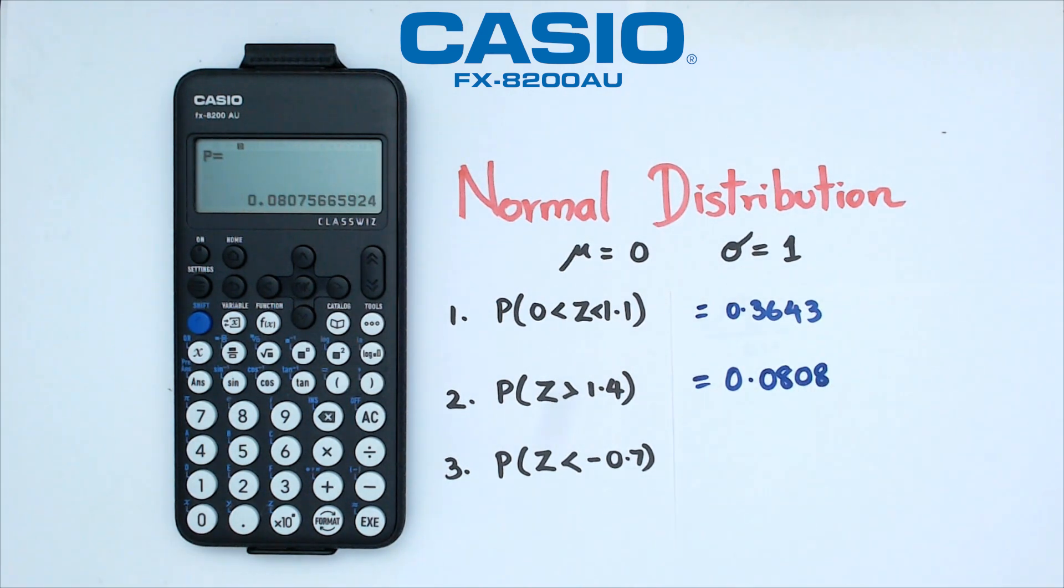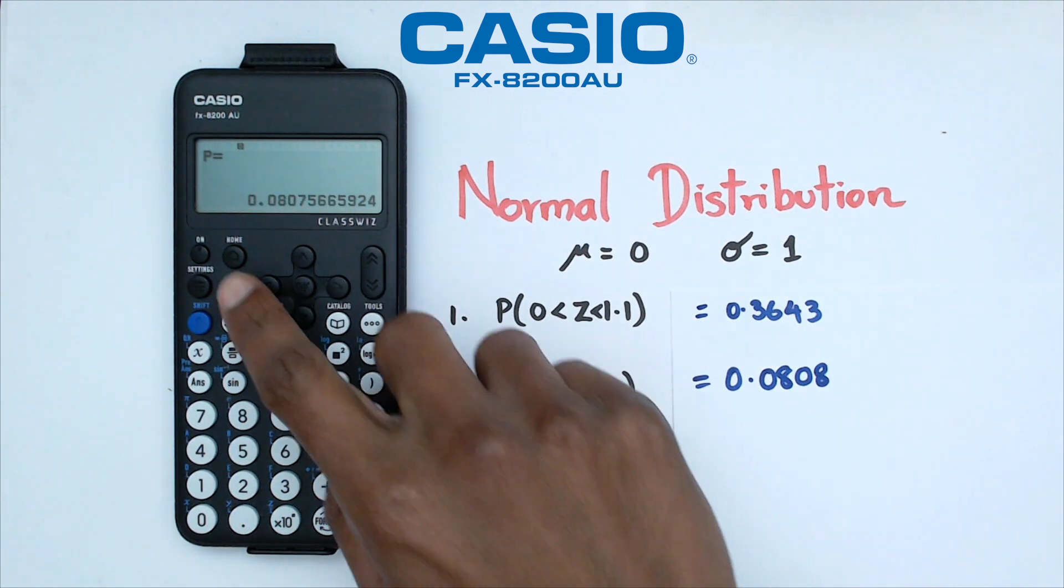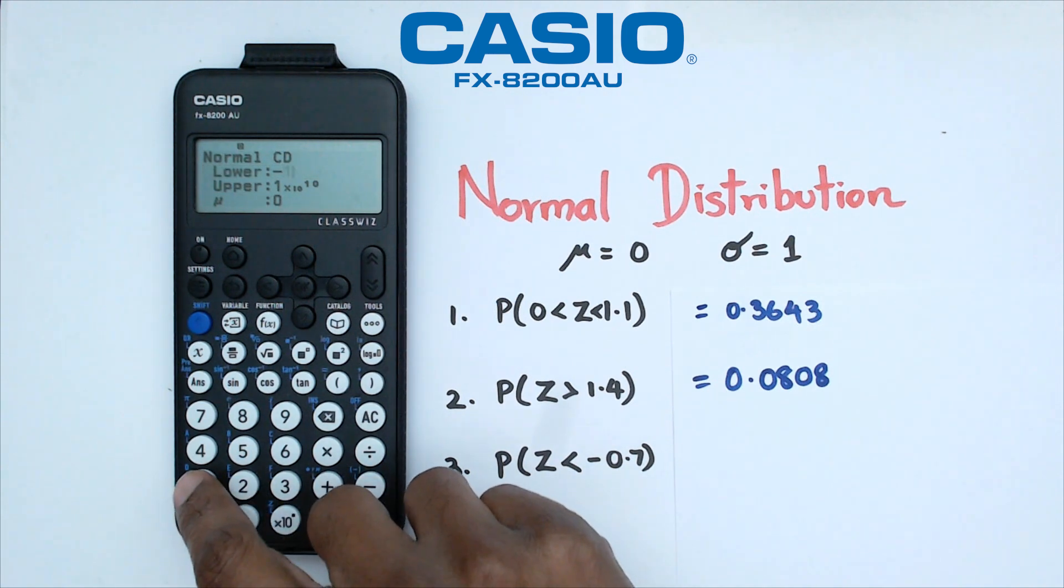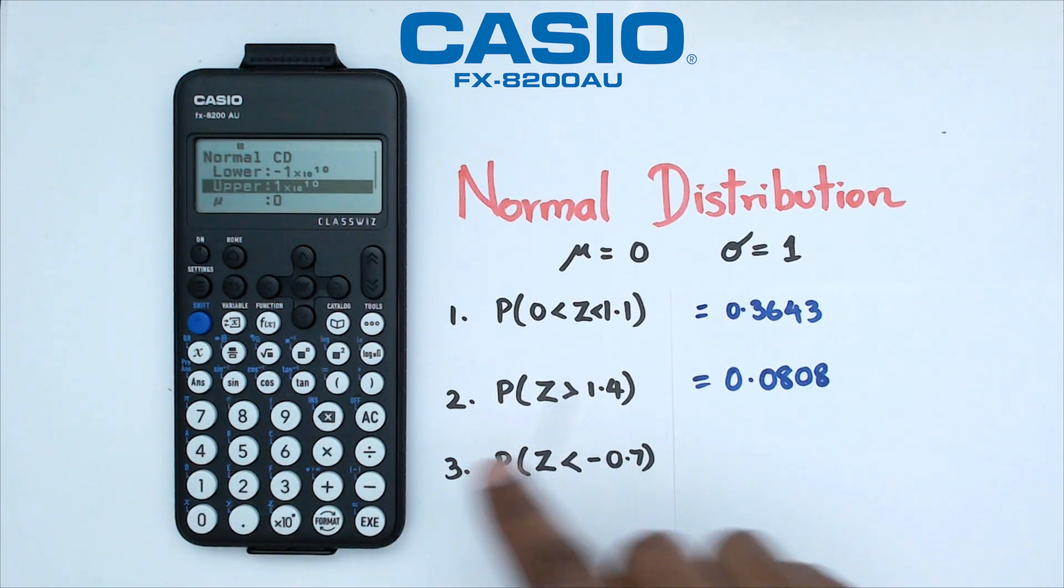And finally, the last question there, where we've got Z less than negative 0.7. So we're going to go back, our lower limit is now going to be negative 1 times 10 to the power of 10. And our upper limit is going to be negative 0.7.